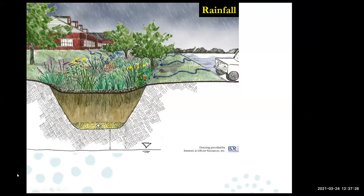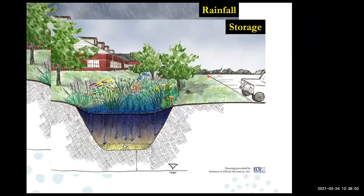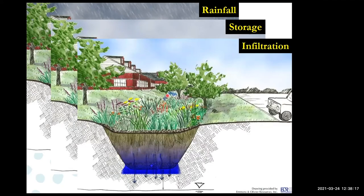The way they typically work: rain gardens are dug down into a depression at a lower point, so as water hits the roof and comes down the downspout, it can flow directly in there, or flow off parking lots and drain in as well. The rain is captured and accumulates in the rain garden, which slowly filters down. Over the next couple of days after the rain event, the water drains out into the groundwater itself.